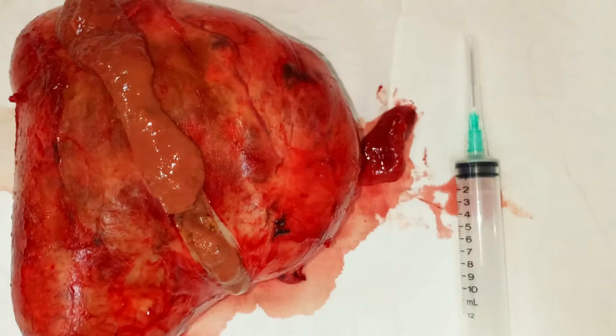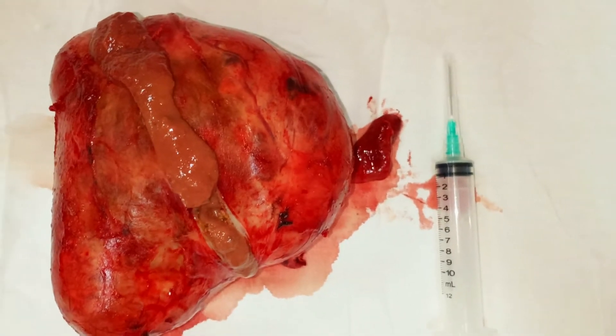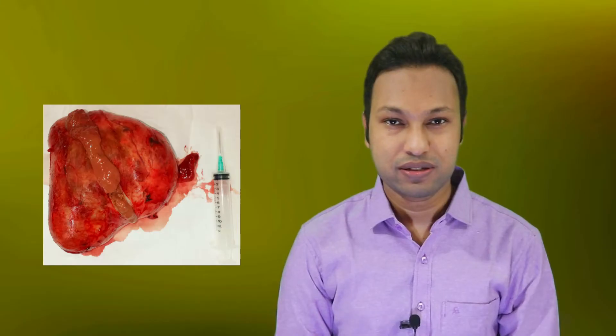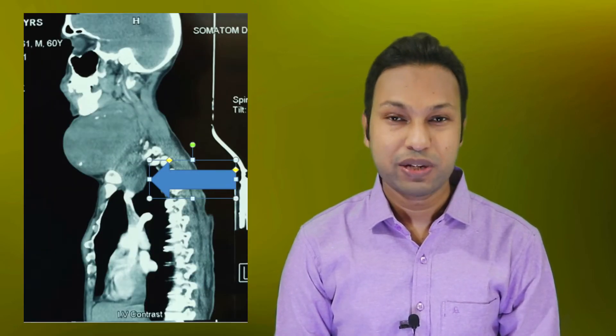Hello viewers, welcome to my channel. Before starting, first have a look at this specimen. This is a specimen of an excised thyroid gland. Look at how huge it is — is it possible to accommodate this huge thyroid gland at the neck? No, actually not. This thyroid gland was extending into the mediastinum. When the enlarged thyroid gland or goiter extends into the mediastinum, we call it retrosternal goiter, and today I am going to talk about it.